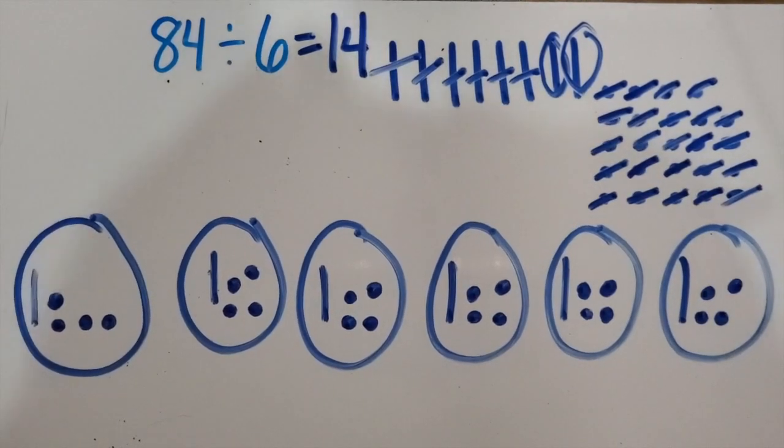We took a two-digit number and divided it by a one-digit number using a pictorial model that shares base 10 blocks among equal groups. If you like this video, please hit the like button and subscribe to my channel. Hit that bell notification so that you are alerted anytime I post a new video. If you found this video helpful, please share it. Until next time, have a great day.